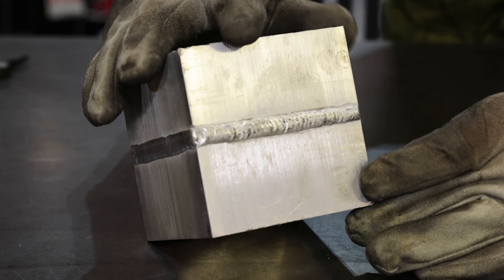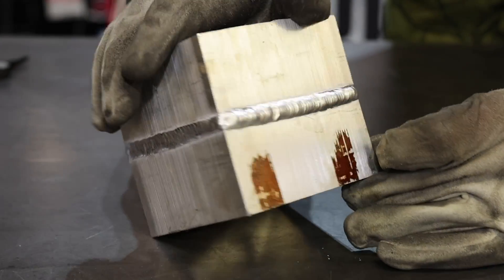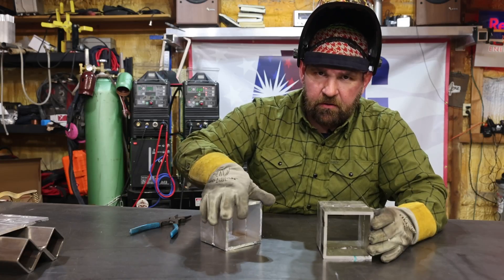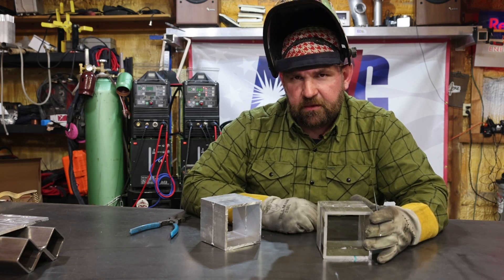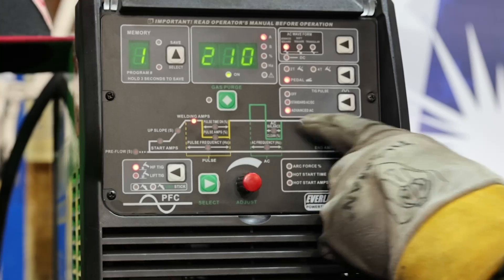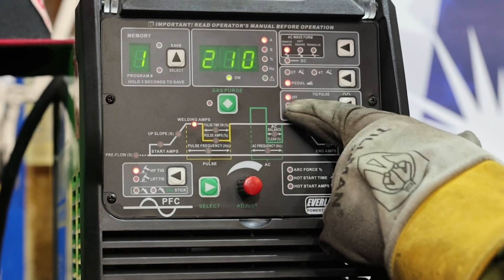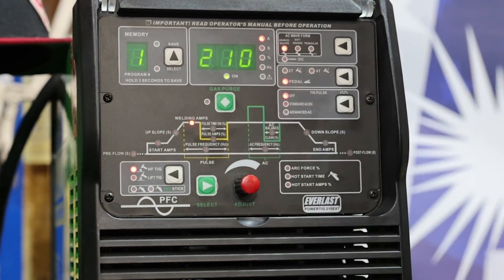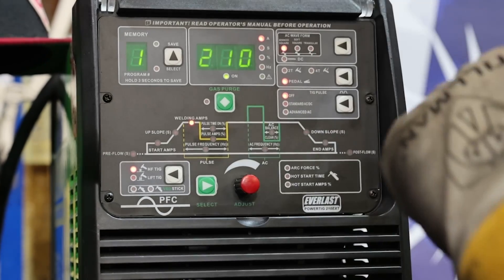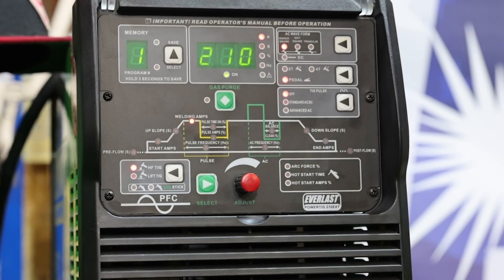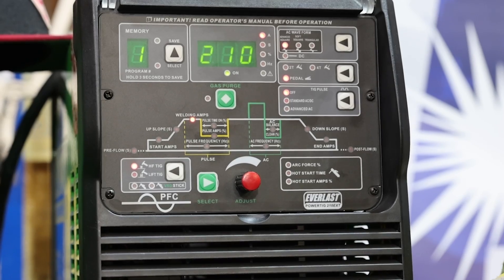So we're going to go ahead and do the same, same fit up, same material, regular AC, and we'll see a pretty significant difference between these two cubes. So now we're going to go back to TIG pulse off. So this is straight AC. We're going to run the same exact settings, our Hertz, our balance, and we're going to show the difference between the two on this quarter inch material.